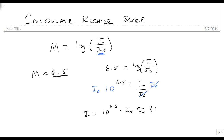So I equals 3,162,277.66 times I₀. That's how much more intense an earthquake with a Richter scale of 6.5 is than the base Richter scale of 0.